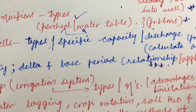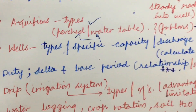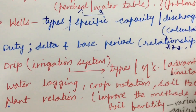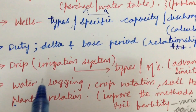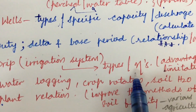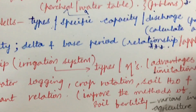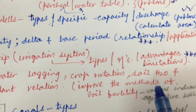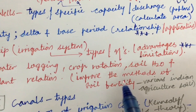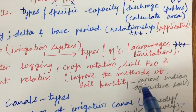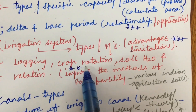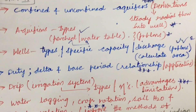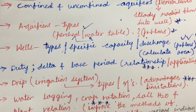Unit 4 is lengthy — it is a combination of three subcategories, so make sure to work out the first three chapters for a better mark. Drip irrigation systems, types of irrigation systems, efficiencies, advantages, and limitations were also asked. Terms like water logging, crop rotation, soil-water-plant relationships, improving soil fertility methods, and Indian agriculture soils may be asked as general questions. These are the questions asked several times as per my analysis of previous year question papers.